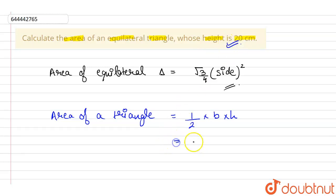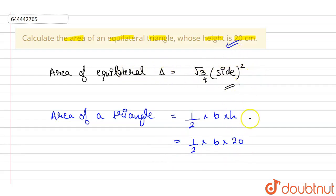So if we replace h by 20, this will be 1/2 times base times 20. This is the area of the equilateral triangle with 20 centimeter height. Since both expressions represent the area of the same triangle, we can equate equation 1 and equation 2.